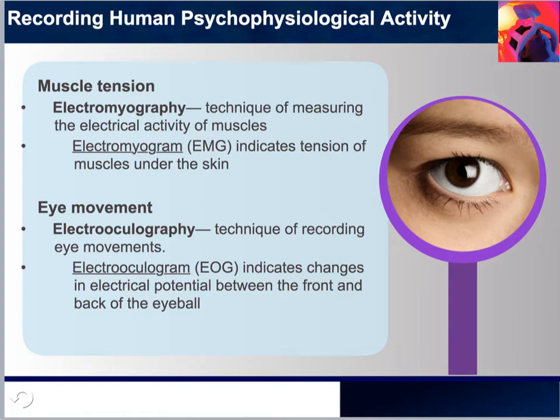Eye movement — electro-oculography — is a technique of recording eye movements. The resulting record is usually recorded between two electrodes taped to the surface of the skin over the muscle of interest.